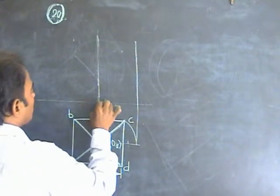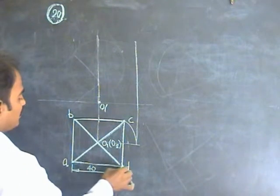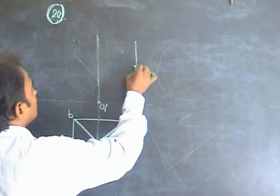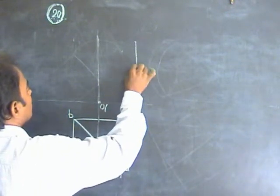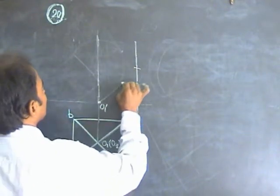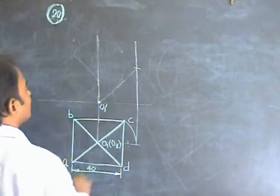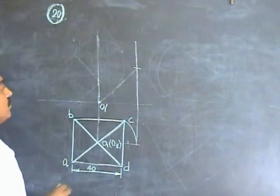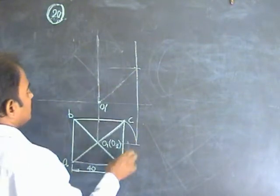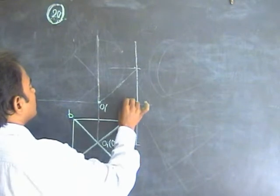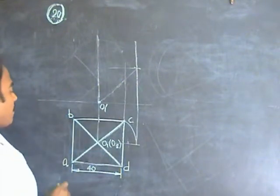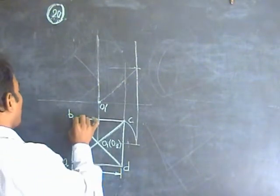With O1 as center and base side 40 as radius, turn one arc. This distance is 40 m. Now capture the points of the octahedron.